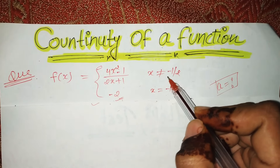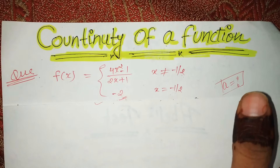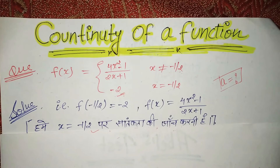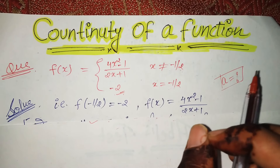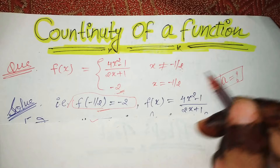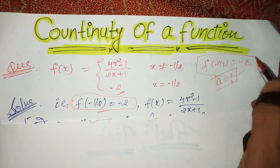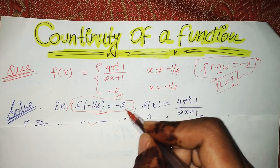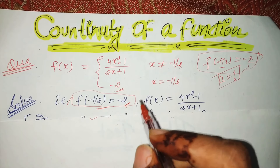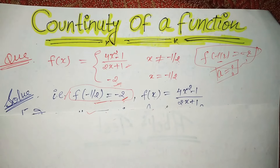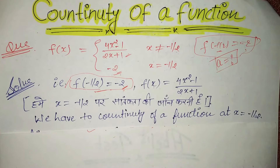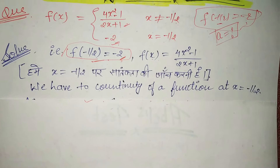Now look here: sometimes the question will directly give you f(minus 1 by 2) = minus 2. You should understand that x equals minus 1 by 2 and A equals minus 2. We need to prove continuity of the function at x equals minus 1 by 2. So students, we need to find the left hand limit and right hand limit. The function f(x) given is (4x² − 1) / (2x + 1).